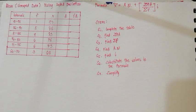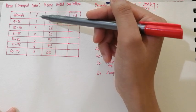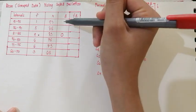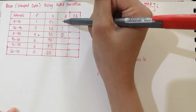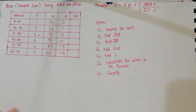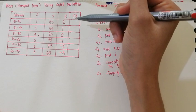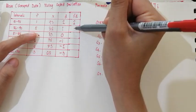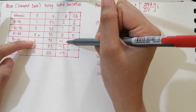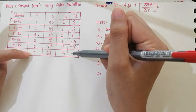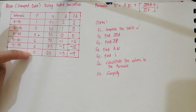Now let's find the deviation. Look for the highest frequency, which is 9. The deviation of the highest frequency is 0. The upper intervals have deviations of 1 and 2. The intervals below have deviations of negative 1, negative 2, and negative 3. Now for FD — multiply frequency and deviation. 1 times 2 is 2. 5 times 1 is 5. 9 times 0 is 0. 6 times negative 1 is negative 6. 6 times negative 2 is negative 12. And 3 times negative 3 is negative 9. Step 1 is done.